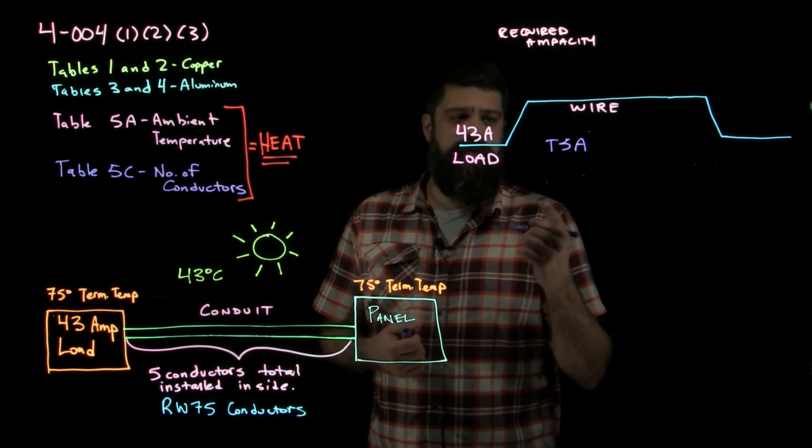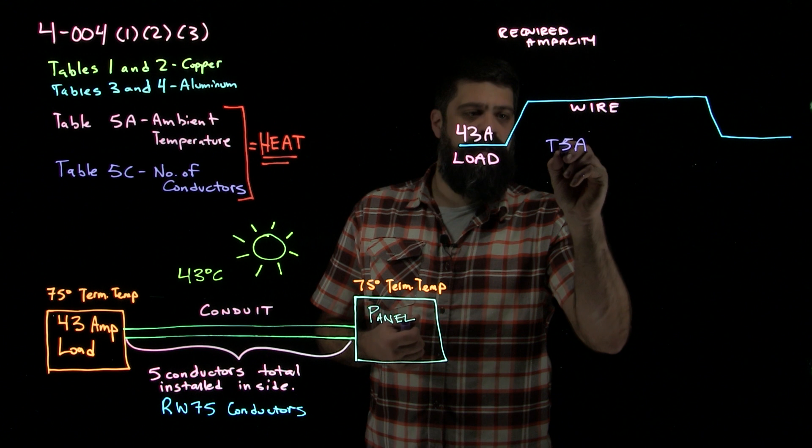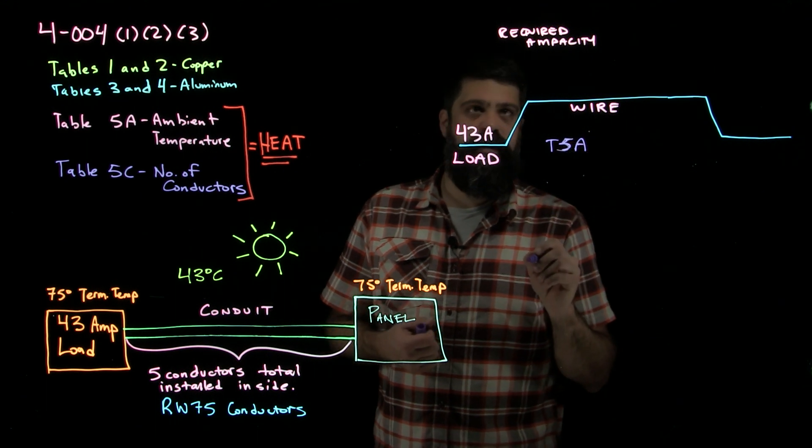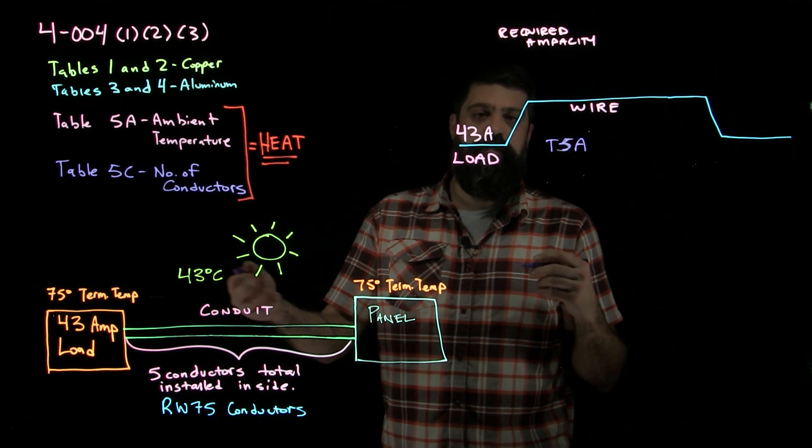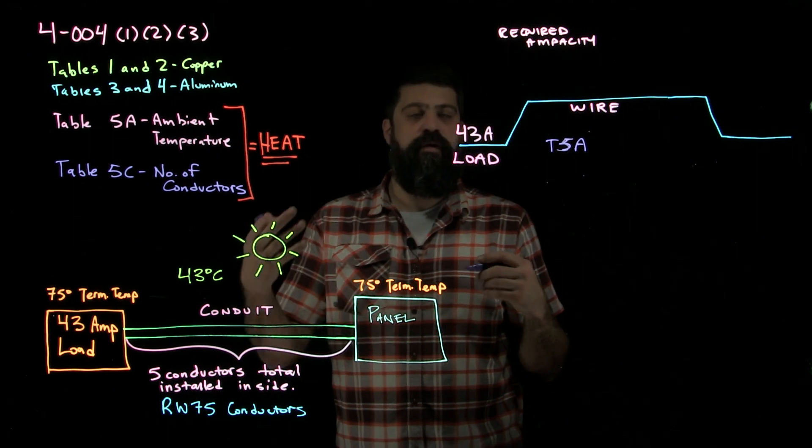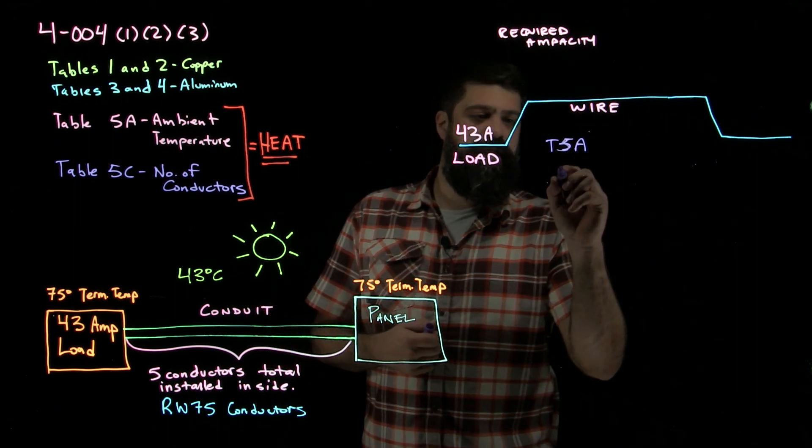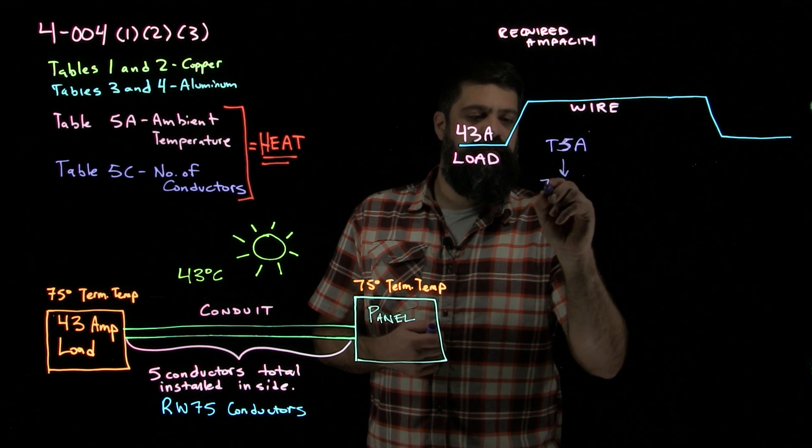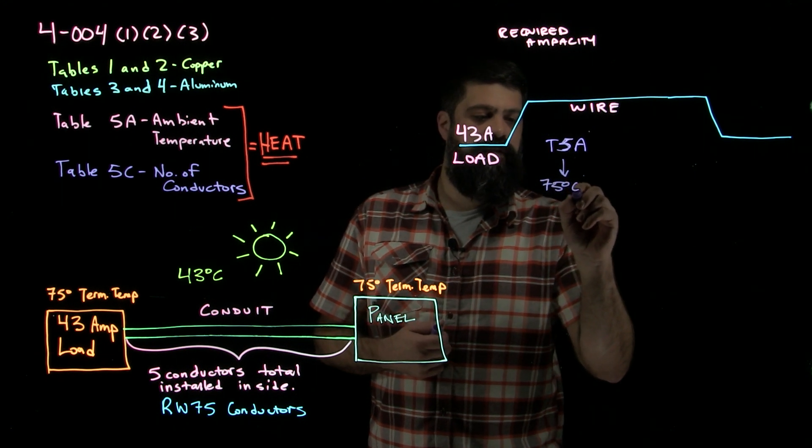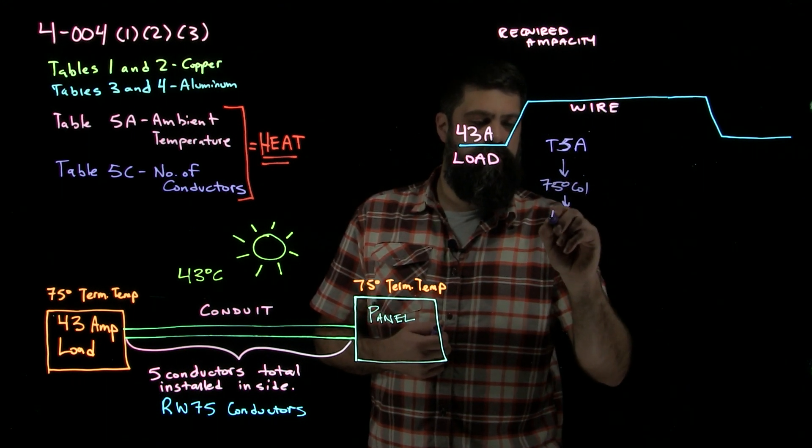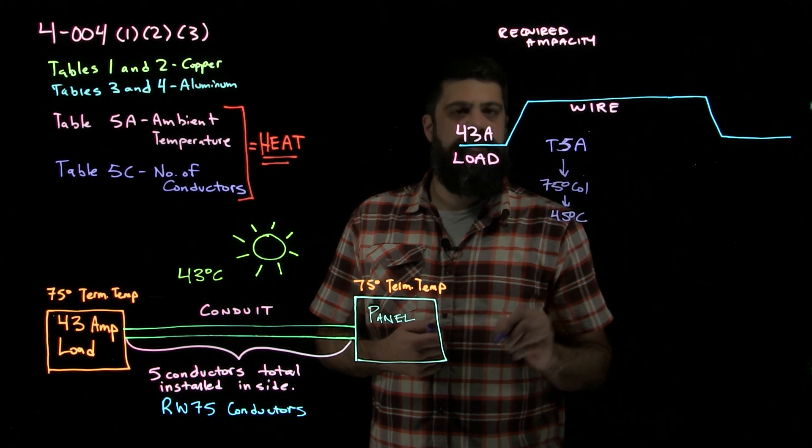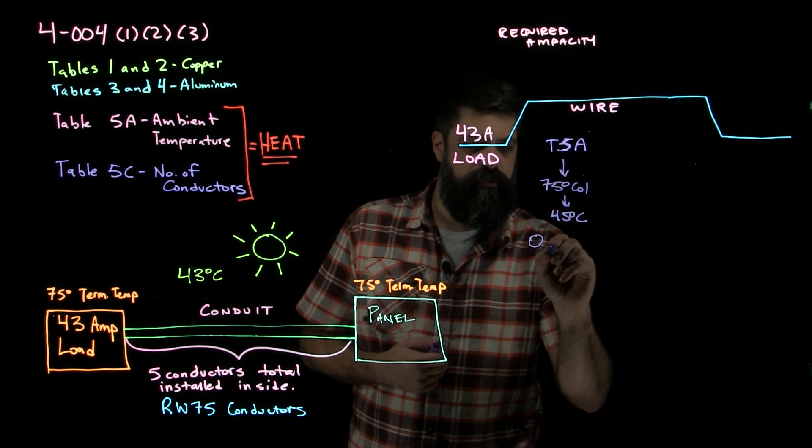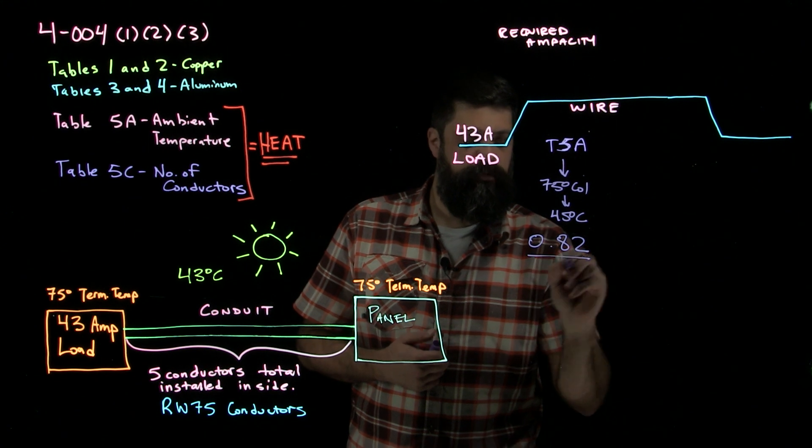So in table 5A, when I look at the 75 degree column, the temperature is 43, but we actually have to go up to 45. We go to the next one up. So when we look in there, 75 degree column at 45 degrees Celsius gives me a derating factor of 0.82.